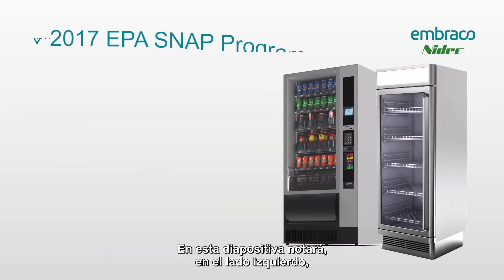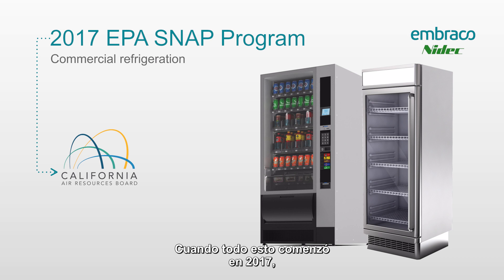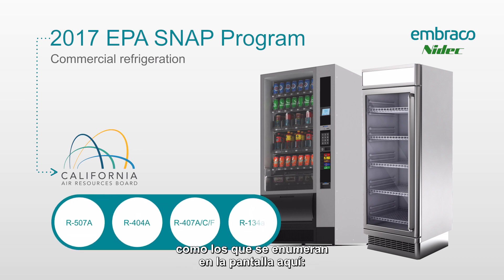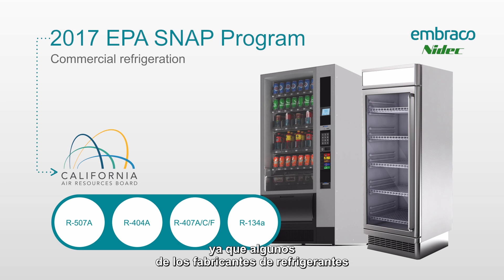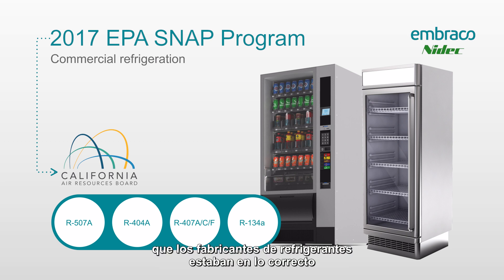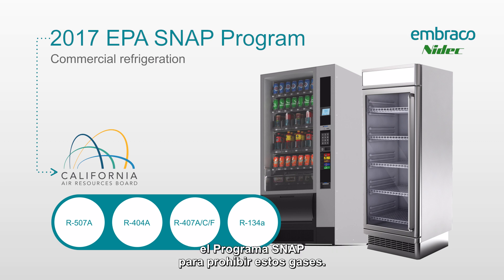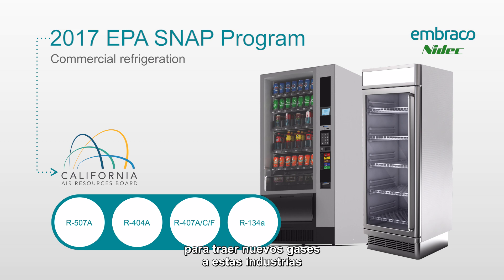You'll notice on the slide on the left side it says California Air Resources Board. When this all started back in 2017, the EPA SNAP program was going to ban certain refrigerants such as R134A, the R407s AC and F, R404A, and R507A. But they ended up being taken to court by some of the refrigerant manufacturers, who did not want them to ban these gases. It was decided in court that the refrigerant manufacturers were correct, and the EPA was shut down from using the SNAP program to ban these gases. The deciding judgment said that the SNAP program could only be used to bring new gases into the industry and not to deregulate current gases.